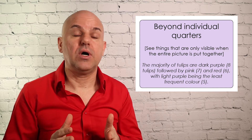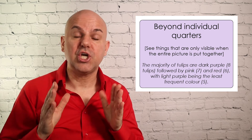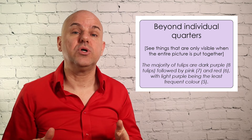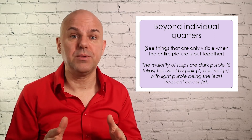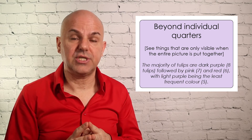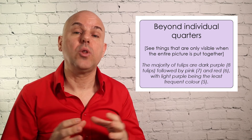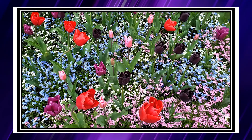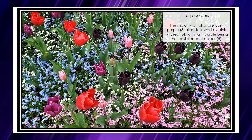When we look at all the individual results together, we can also provide observations that go beyond individual quarters — things that are only visible when the entire picture is put together. For example, in relation to tulip colors, we could say that the majority of tulips are dark purple with eight bulbs, followed by pink with seven, red with six, and light purple being the least frequent color with five bulbs only.